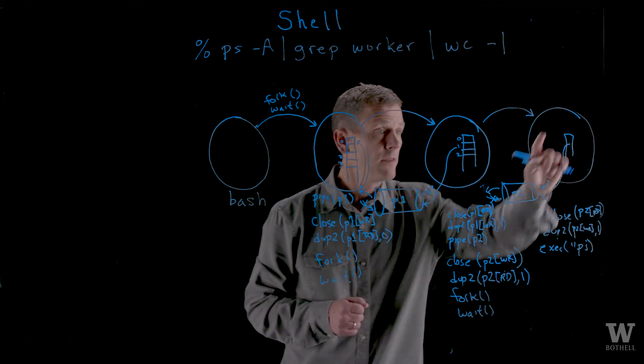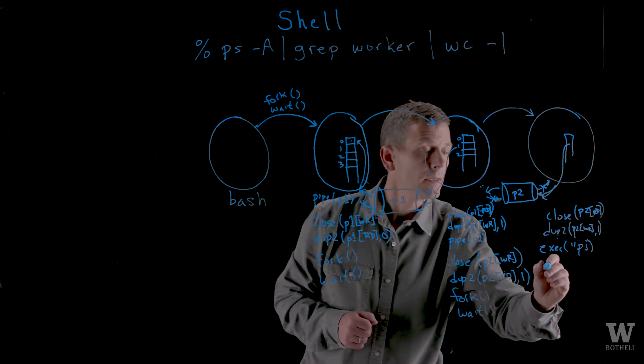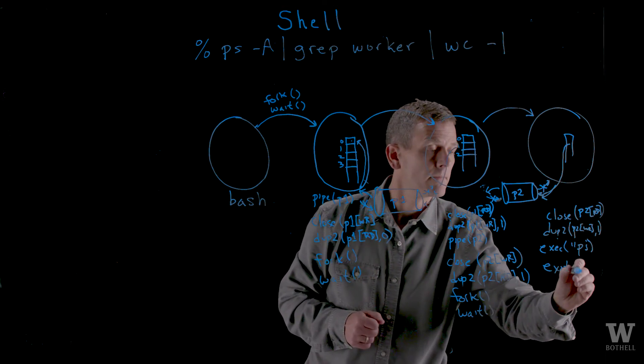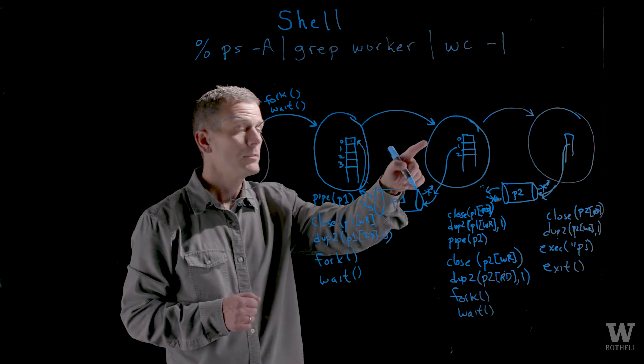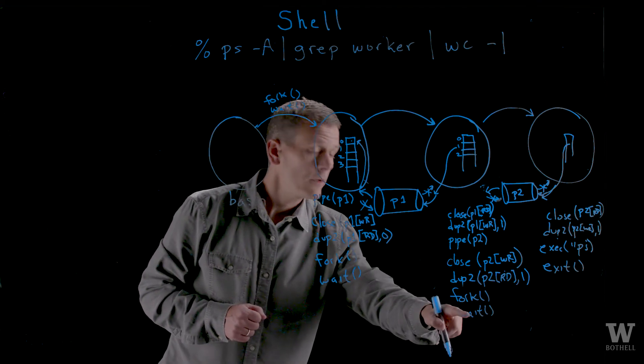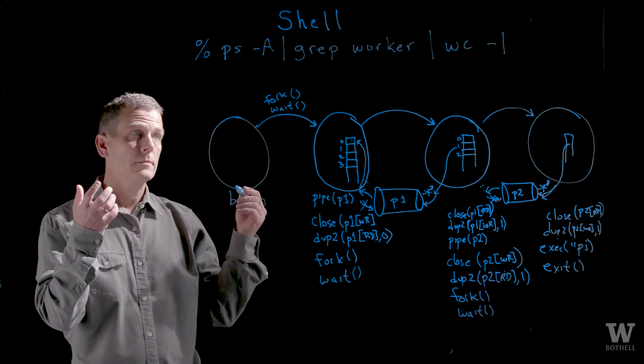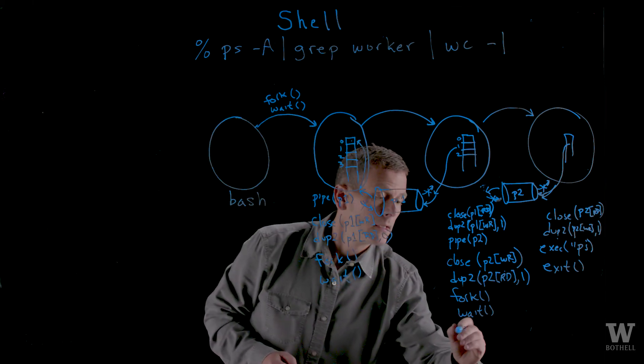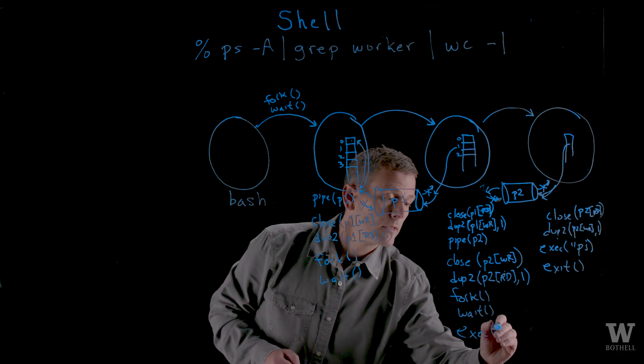Then when it's done, the output of ps is in this pipe. I exit. That process stops and the parent who is waiting starts executing again. We'll exit, we'll exec the grep here.